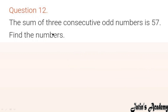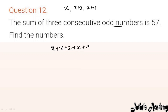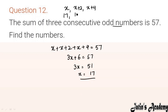Question 12: The sum of 3 consecutive odd numbers is 57. For consecutive odd or even numbers, let the first number be x, the second be x plus 2, and the third be x plus 4. So x plus (x plus 2) plus (x plus 4) equals 57, giving 3x plus 6 equals 57, so 3x equals 51 and x equals 17. The three odd numbers are 17, 19, and 21.